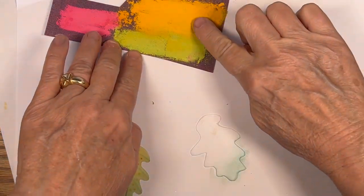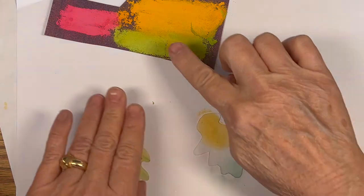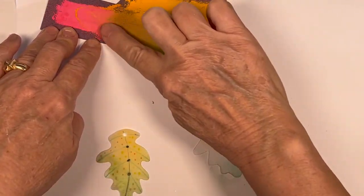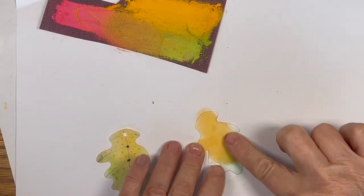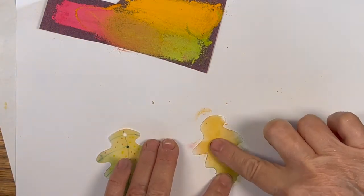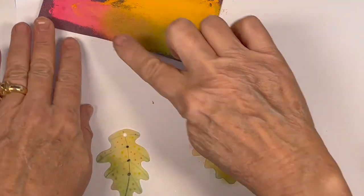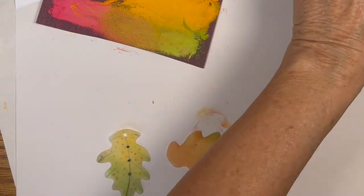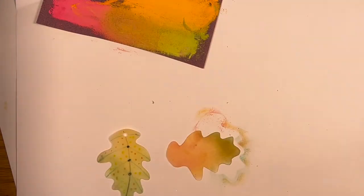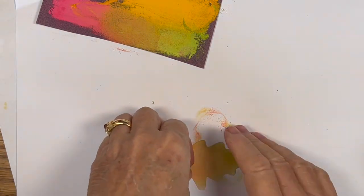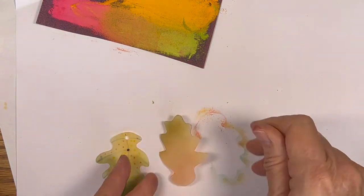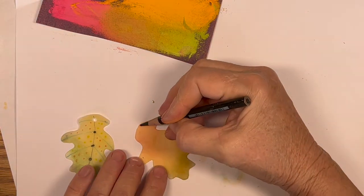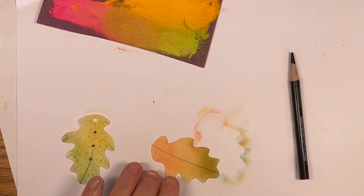I'll mix pastels with inks, mix these colors and make kind of an olive green and orange, and come in here with the stem.